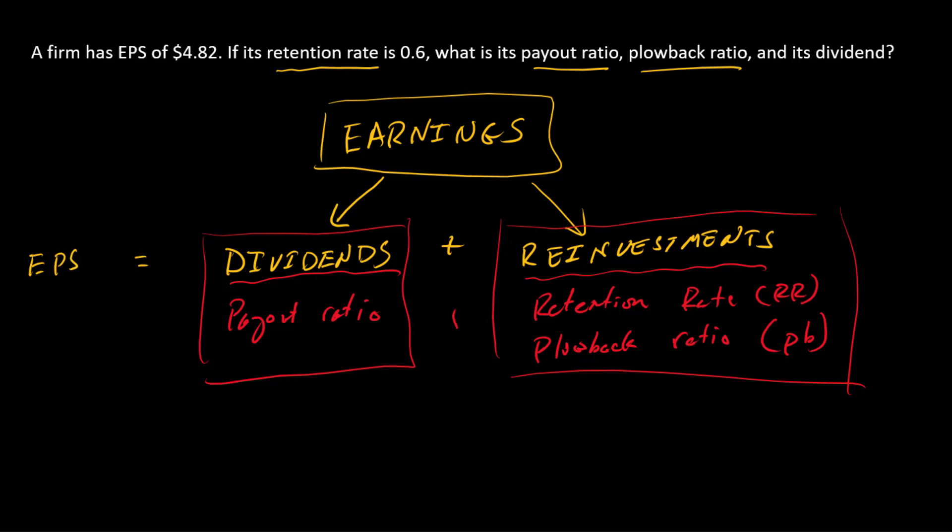And in ratios or fractions, those are going to sum to one. So what are we given? We're given the retention ratio of 0.6. Well, since the retention ratio and the plowback ratio are synonyms, that is also 0.6. And since the retention ratio and payout ratio have to sum to one, then that must be 0.4.